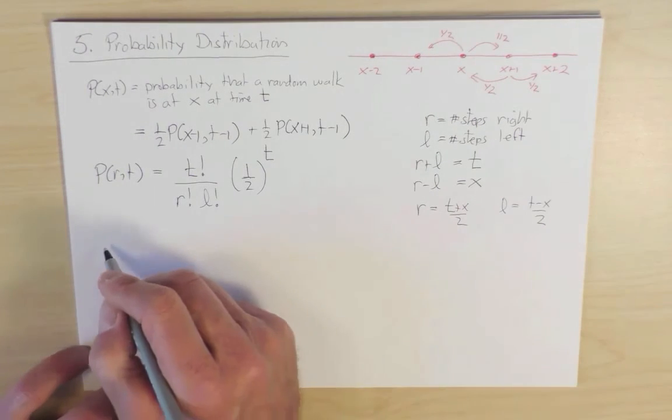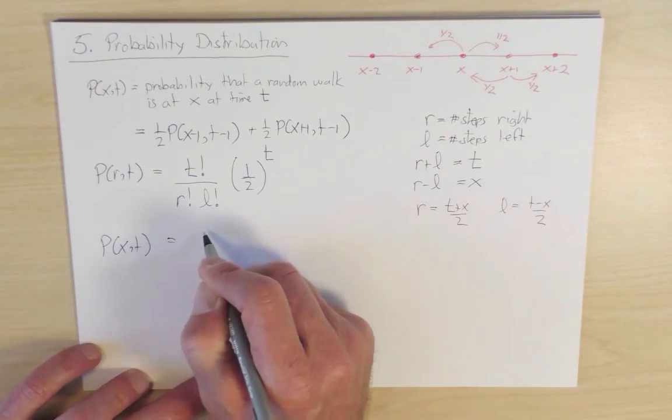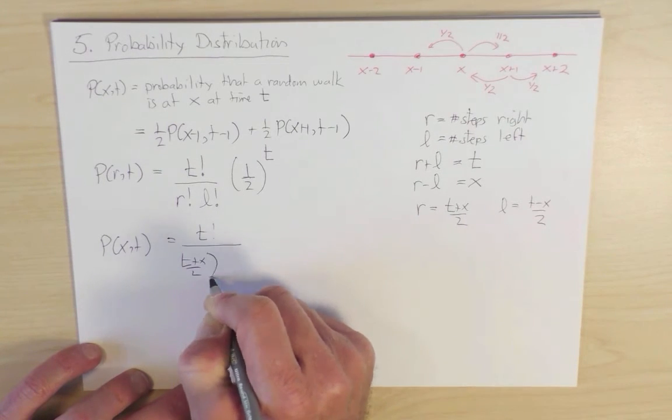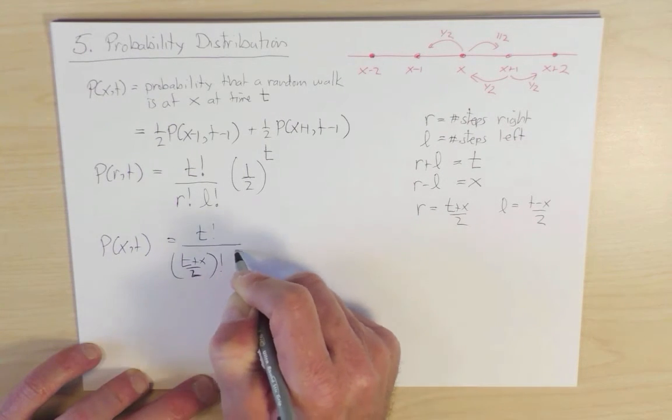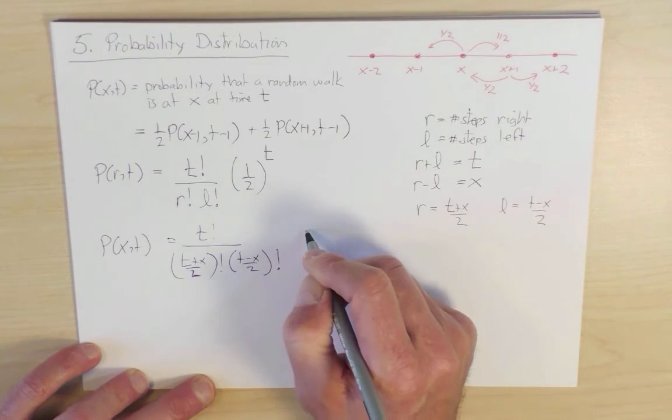So therefore, we have our fundamental result that P(x,t) is equal to t factorial, divided by t plus x over 2 factorial, t minus x over 2 factorial, times 1 half to the power t.